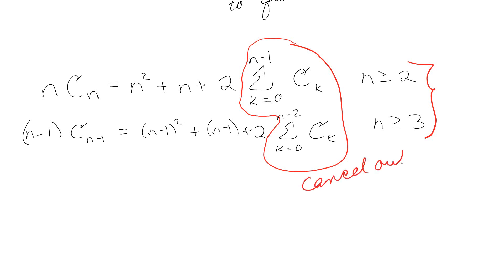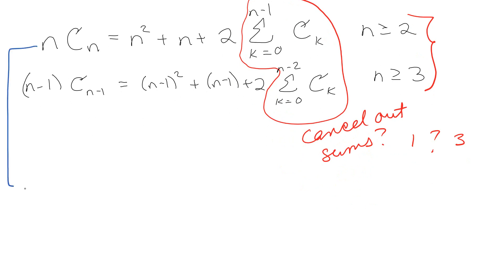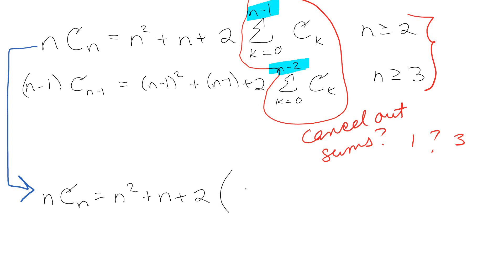The strategy is to cancel out the sums. We take the equation for n·C(n) and pull the n − 1 term out of the summation, so instead of going from 0 to n − 1 we go from 0 to n − 2 and handle the c(n − 1) term separately. Rewriting: n·C(n) = n² + n + 2·C(n − 1) + 2 times the sum from k = 0 to n − 2 of C(k).